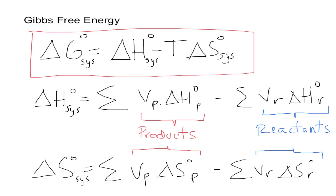In this video I'm going to solve practice problems on Gibbs free energy. As a quick reminder, here are the formulas we need. We're interested in the change in Gibbs free energy, and to find that we use the formula: Delta G for the system is equal to Delta H, that's our enthalpy, minus the temperature times the change in entropy for the system. To find those two — the change in entropy of formation and the change in enthalpy of formation — we're going to use the formulas we've seen before.